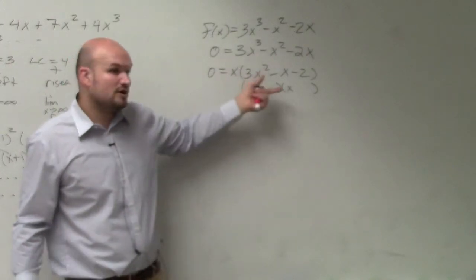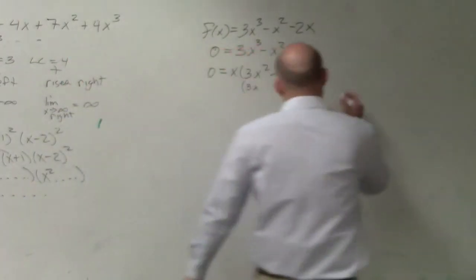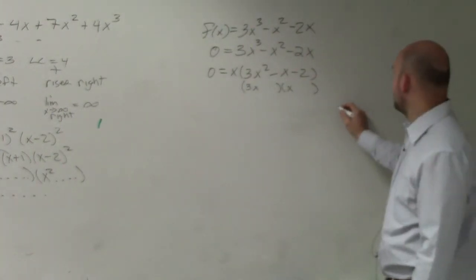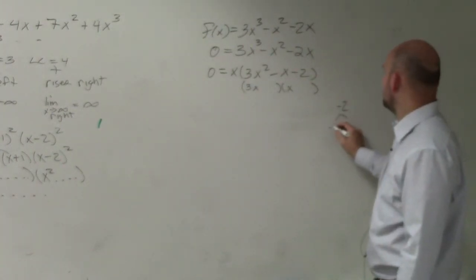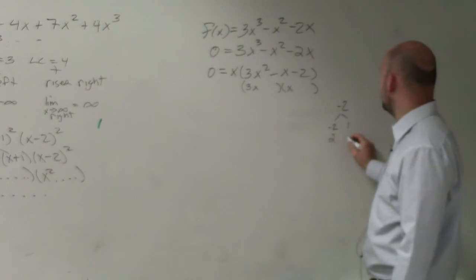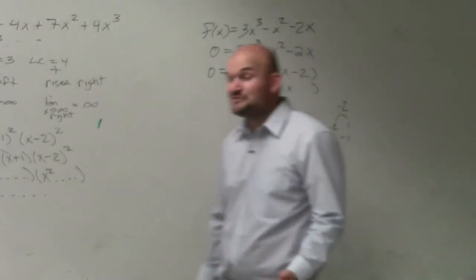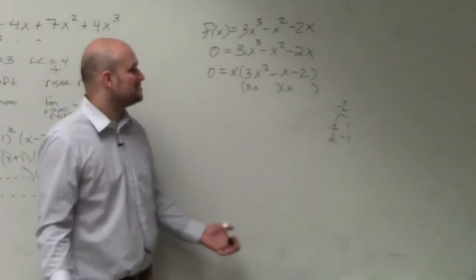Now I need to think about what numbers multiply to give me negative 2. Negative 2 could be negative 2 and 1, or 2 and negative 1. So we only have two options.